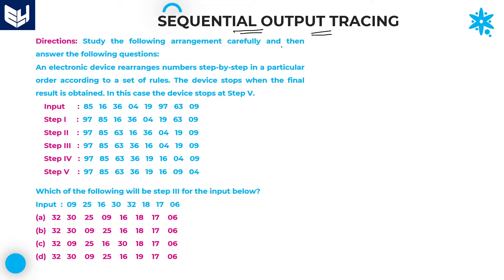Here is the information you need to read carefully: an electronic device rearranges numbers step by step in a particular order according to a set of rules. The electronic device rearranges the numbers based on the given numbers, and the device stops when the final result is obtained. For this question, the device stops at step 5.